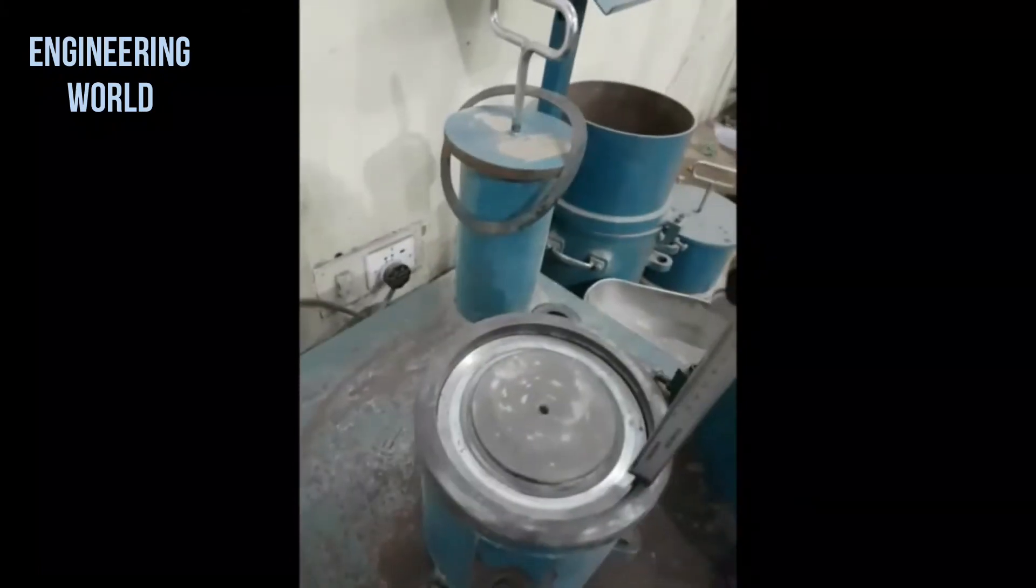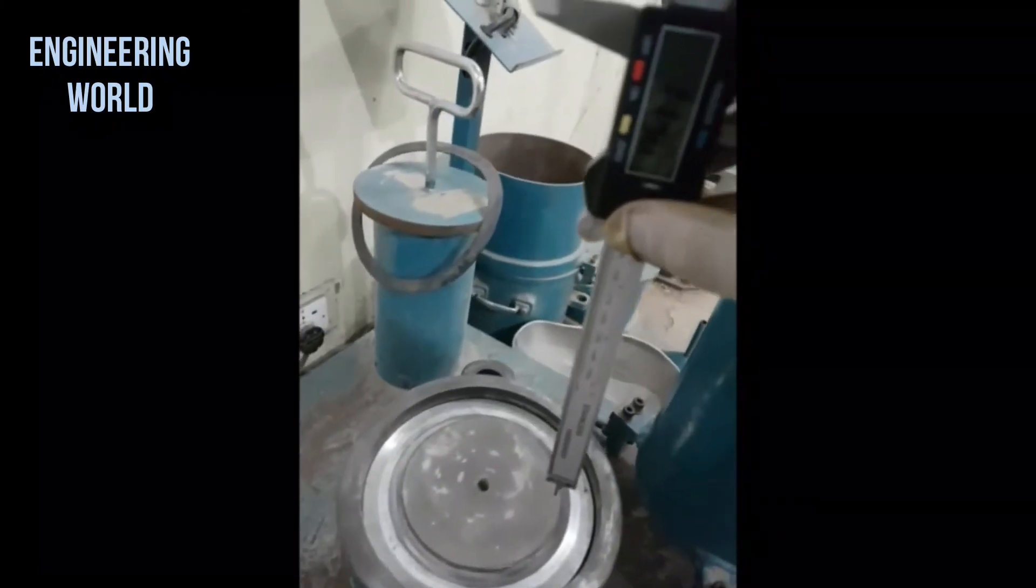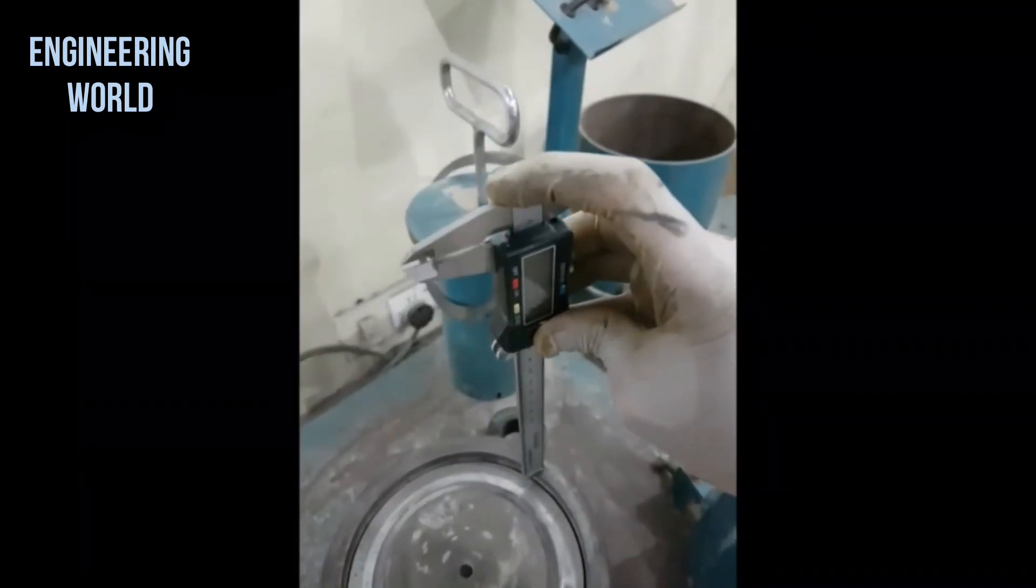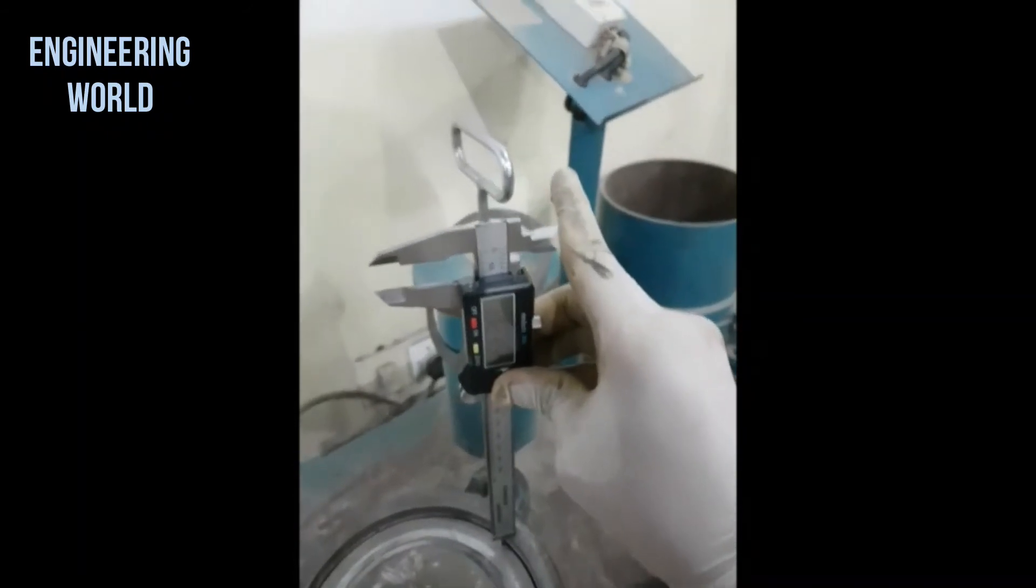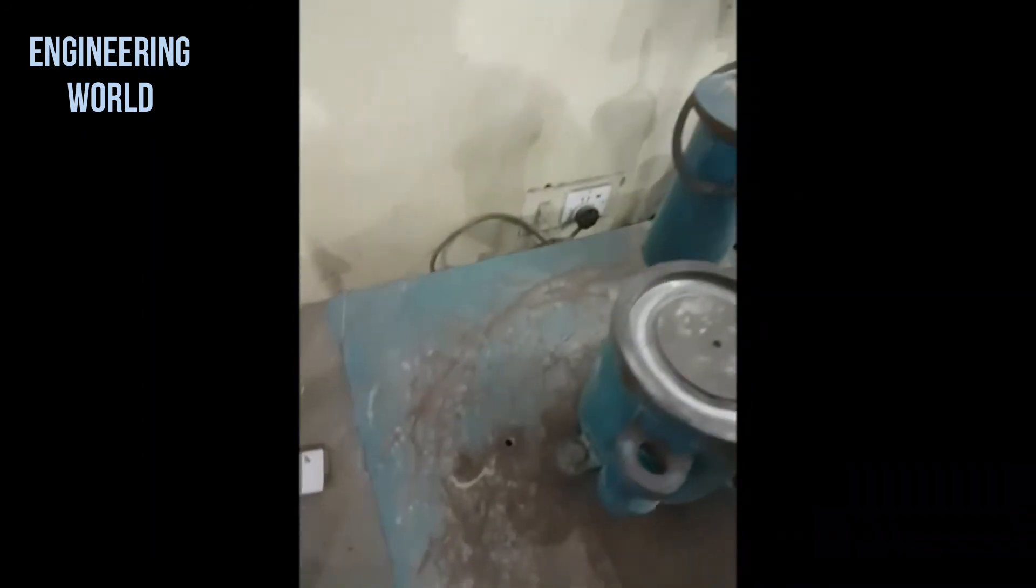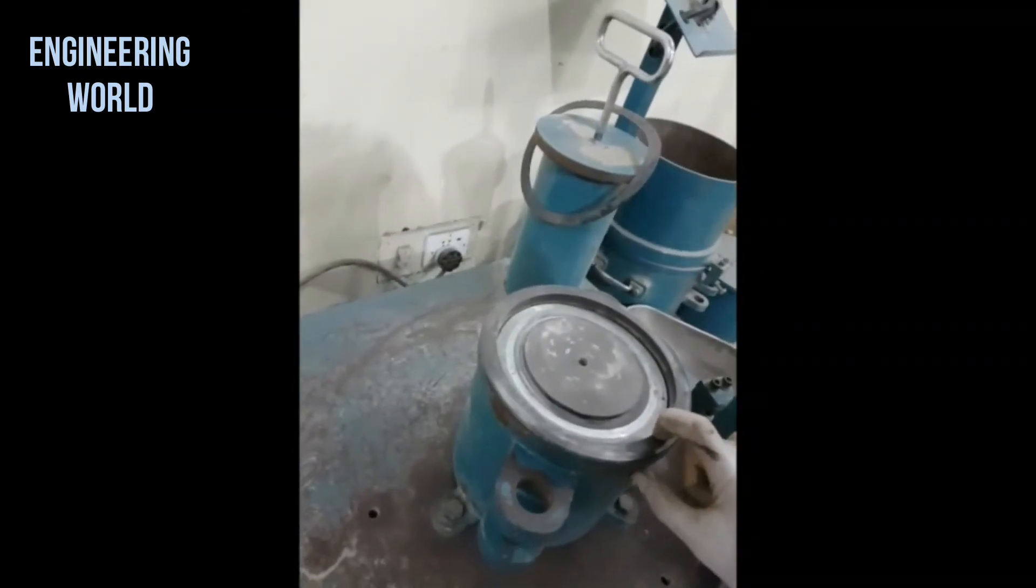We will measure at two more points to take the average value of the settlement. And now here it is 12.33 millimeters. And at this point it is 12 millimeters. Using these three values plus 13.82 for each one we will take the average drop in height. And that is the difference between the initial height of the sand and the current height of the sand.